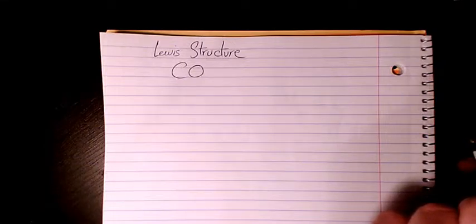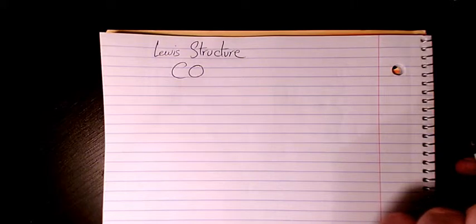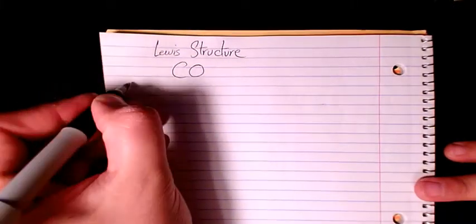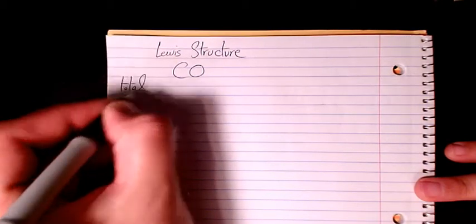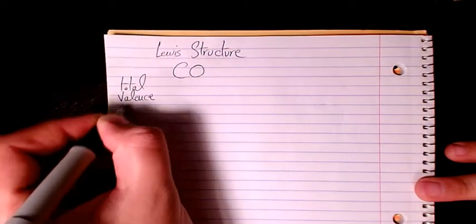What's up guys, this is Massey. Welcome to my channel. In this video I want to show you how to draw the Lewis structure for carbon monoxide. I'll start with total valence electrons.